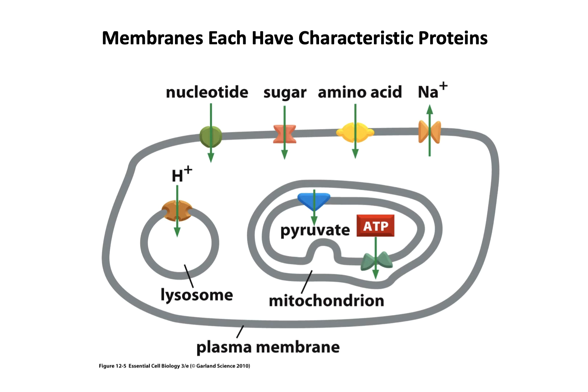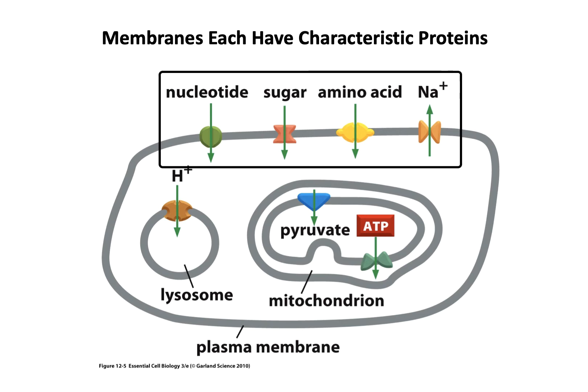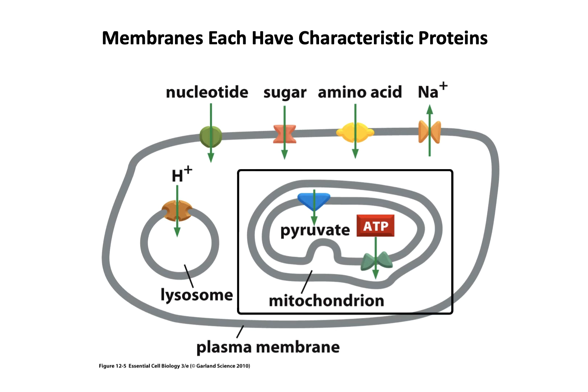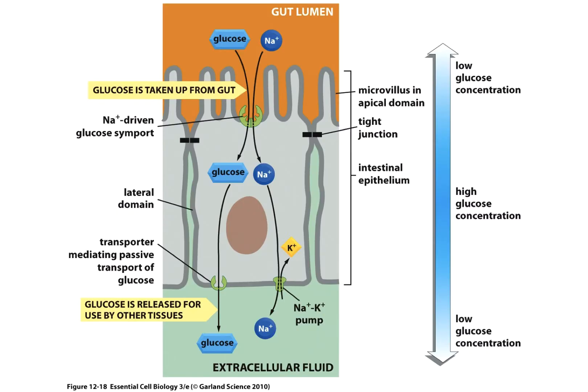Different membranes inside eukaryotic and prokaryotic cells have different receptors and different membrane proteins. The plasma membrane around a cell has nucleotide transporters, sugar transporters, amino acid transporters, and sodium transporters which send sodium out of the cell. A lysosome will allow protons to go through, which acidifies the lysosome. Mitochondria have transporters to import pyruvate and export ATP as they produce it.